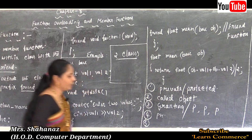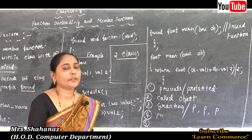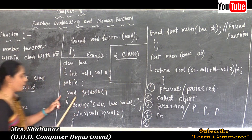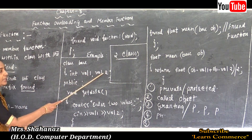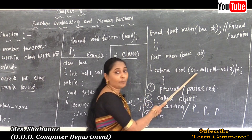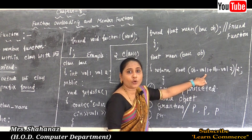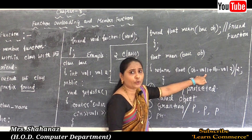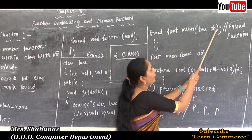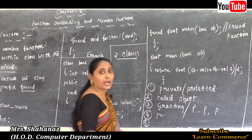Fifth note: when accessing member variables using the friend function, you cannot access the member variable directly. You must use the object name and member name, like ob.val1 and ob.val2. The friend function object name is 'ob', so we access via ob.val1 + ob.val2.